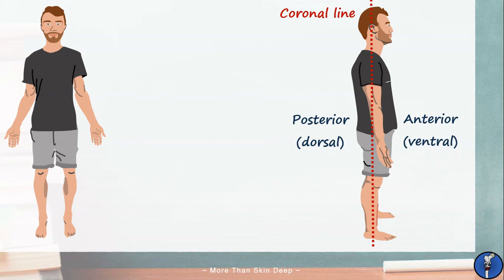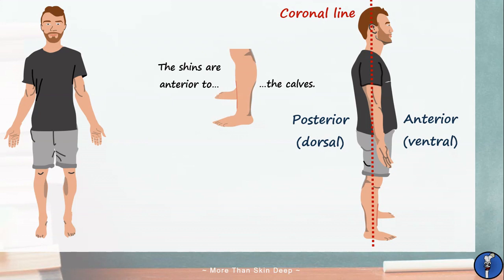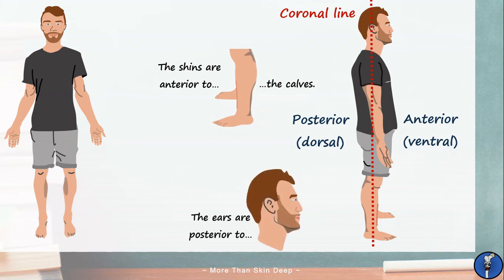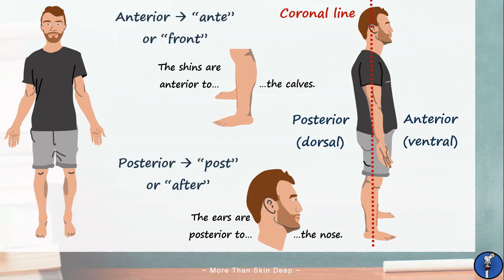For example, the shins can be described as anterior to the calves, and the ears can be described as posterior to the nose. These words derive from anti, meaning front, and post, meaning after.